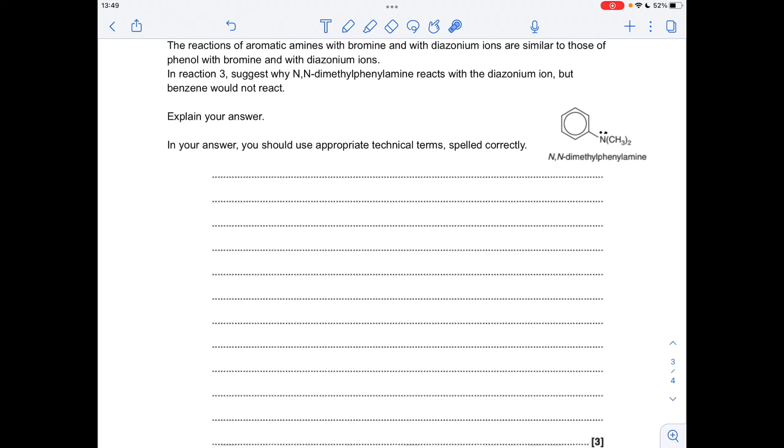And for the final part of the question, we've got to suggest why this compound here would react with the diazonium ion that's in the flow chart but benzene wouldn't. Now you'll notice I've drawn a lone pair on the nitrogen, so this is similar to what happens with the lone pair on the oxygen of phenol.